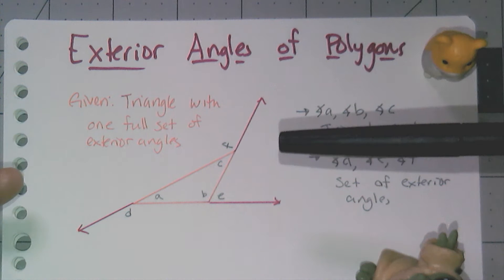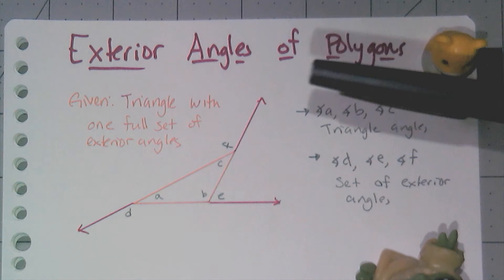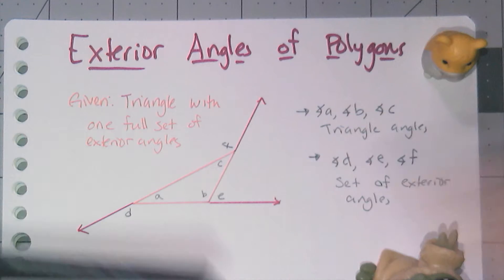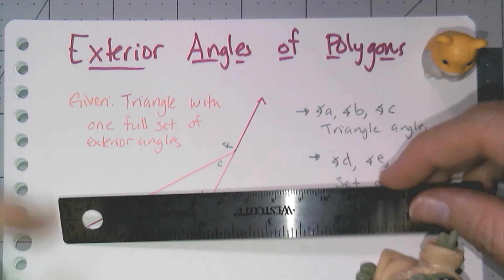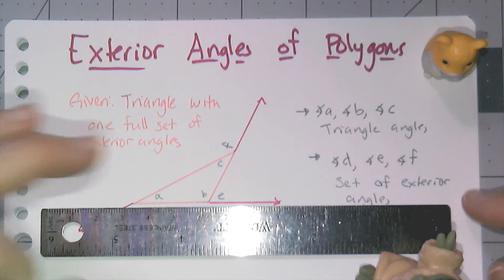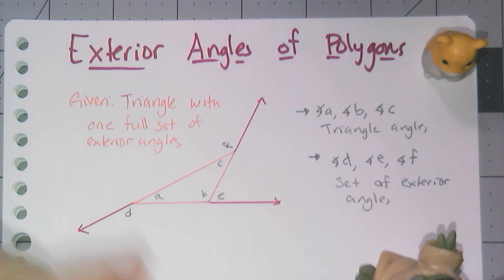And so what I have in my drawing is a triangle with one full set of exterior angles drawn. Now you'll notice I don't have all of the exterior angles drawn, because I can actually, for example, extend this side out in this direction and create another exterior angle for angle A.